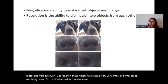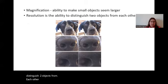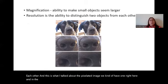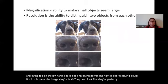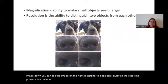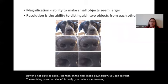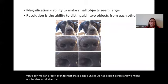Magnification is the ability to make small objects seem larger, but resolution is the ability to distinguish two objects from each other — that's what I talked about with the pixelated image. In the top left is good resolving power; the right is poor resolving power, but in that particular image they both look fine. In the next image down, you can see the image on the right is starting to get a little blurry — the resolving power is not quite as good.